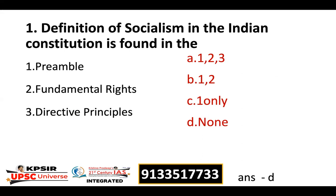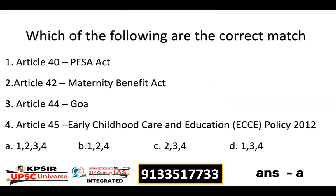The answer is that socialism is found in the Preamble, and there are some reflections in the Directive Principles. The definition of socialism was added by the 43rd Amendment. None of the other options alone are correct, so the answer is D. The Prime Minister and Council of Ministers collectively responsible to the House of People, not to the Parliament as a whole — so the assertion is not fully correct.